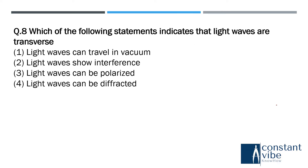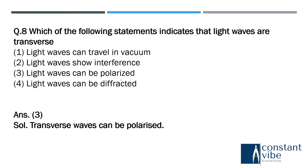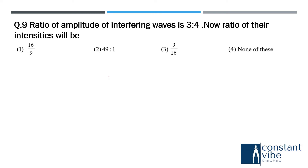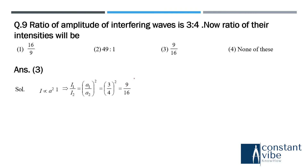Next question: which of the following statements indicate that light waves are transverse? Statement 3 — light waves can be polarized. Next, the ninth question: the ratio of amplitude of interfering waves is 3 to 4, and the ratio of their intensities will be 9 to 16, using the formula that intensity is directly proportional to amplitude squared.